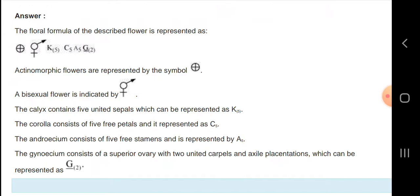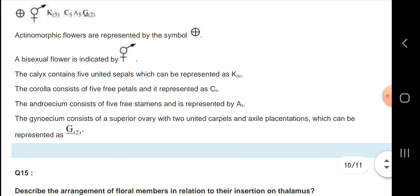The corolla is represented like this, and the androecium A5, the male reproductive part, you have to represent like this, and gynoecium you have to represent like G2.